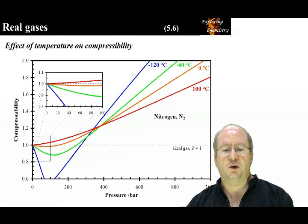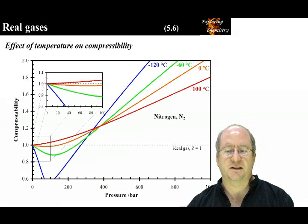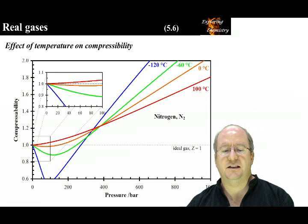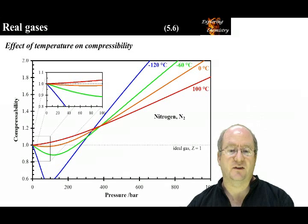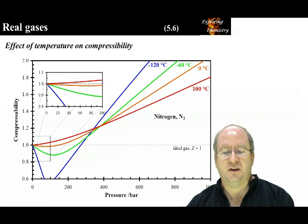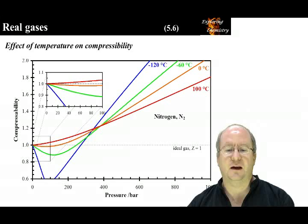This figure looks at the effect of temperature on the compressibility. This figure is for nitrogen gas at varying temperatures. We know that nitrogen condenses to a liquid at minus 196 degrees Celsius, or 77 Kelvin. So at this temperature, the intermolecular forces are stronger than the thermal energy. It is evident that the deviations from ideal gas behavior increase as the temperature decreases.